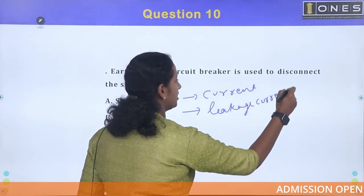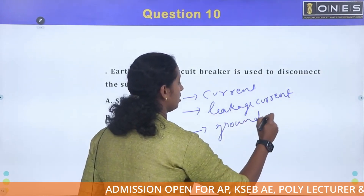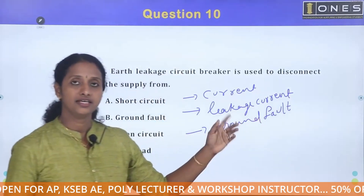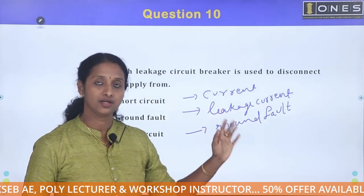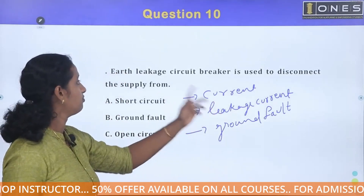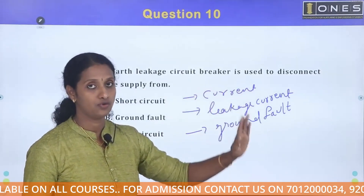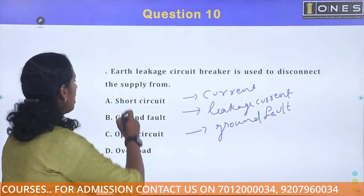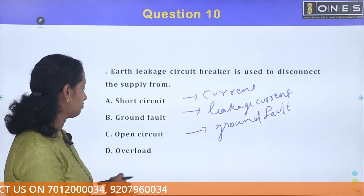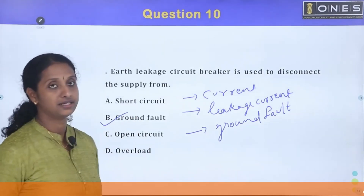What type of fault does ELCB detect? It detects ground fault. The options include short circuit fault, ground fault, open circuit fault, and overload fault. Option B — ground fault — is the correct answer.